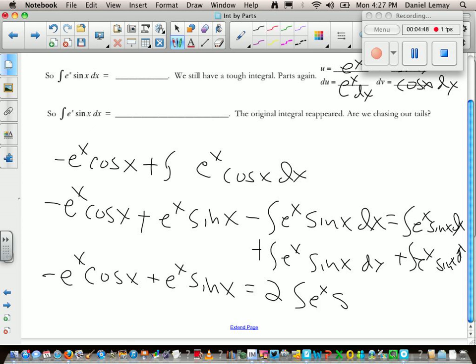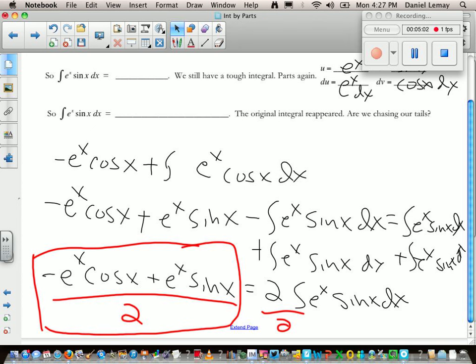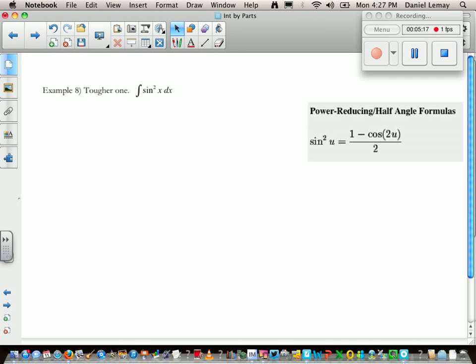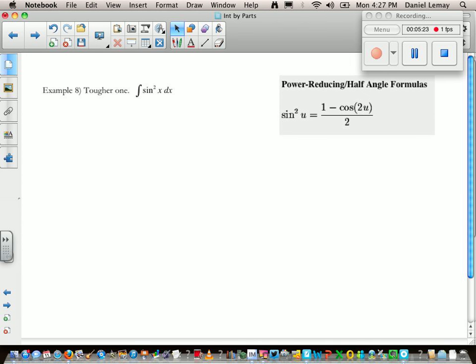dx plus the integral of e to the x sine x dx. What that gives me is two of those integrals, which means I can divide both sides by two. So this is all over two, and that is the integral of that function. Nasty. This is as bad as integration by parts gets. Well, in calc two you might have to do it three, four times, but really that's what they make Wolfram Alpha for, if you get my drift.